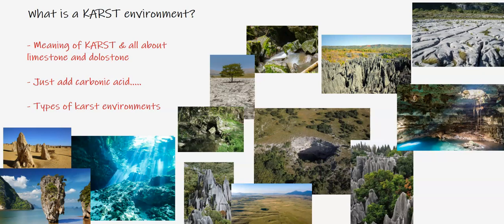We'll cover the meaning and where the word derives or originates from, and literally just have to add a little thing called carbonic acid, which is naturally occurring, and that will form these different kinds of environments, which we'll list in this video as well.